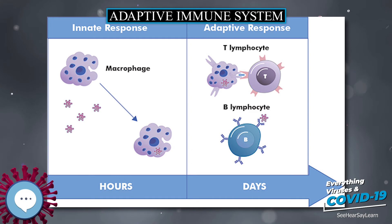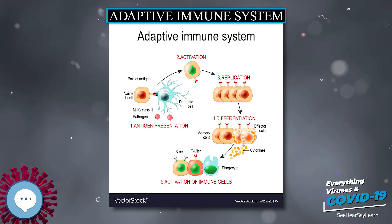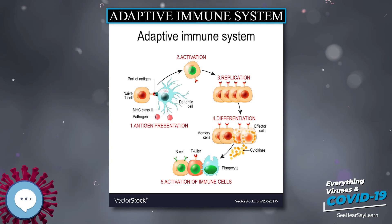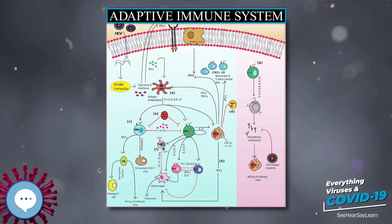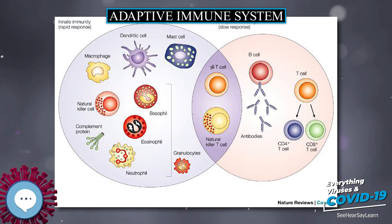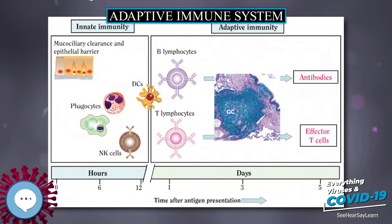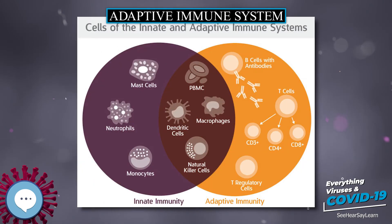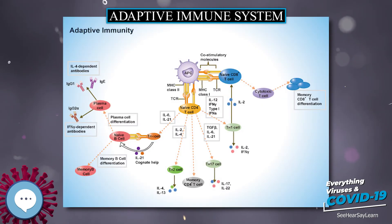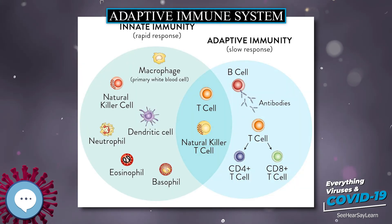Primitive jawless vertebrates such as the lamprey and hagfish have an adaptive immune system that shows three different cell lineages, each sharing a common origin with B cells, alpha-beta T cells, and innate-like gamma-delta T cells. Instead of the classical antibodies and T cell receptors, these animals possess a large array of molecules called variable lymphocyte receptors (VLRs), that — like the antigen receptors of jawed vertebrates — are produced from only a small number (one or two) of genes. These molecules are believed to bind pathogenic antigens in a similar way to antibodies and with the same degree of specificity.